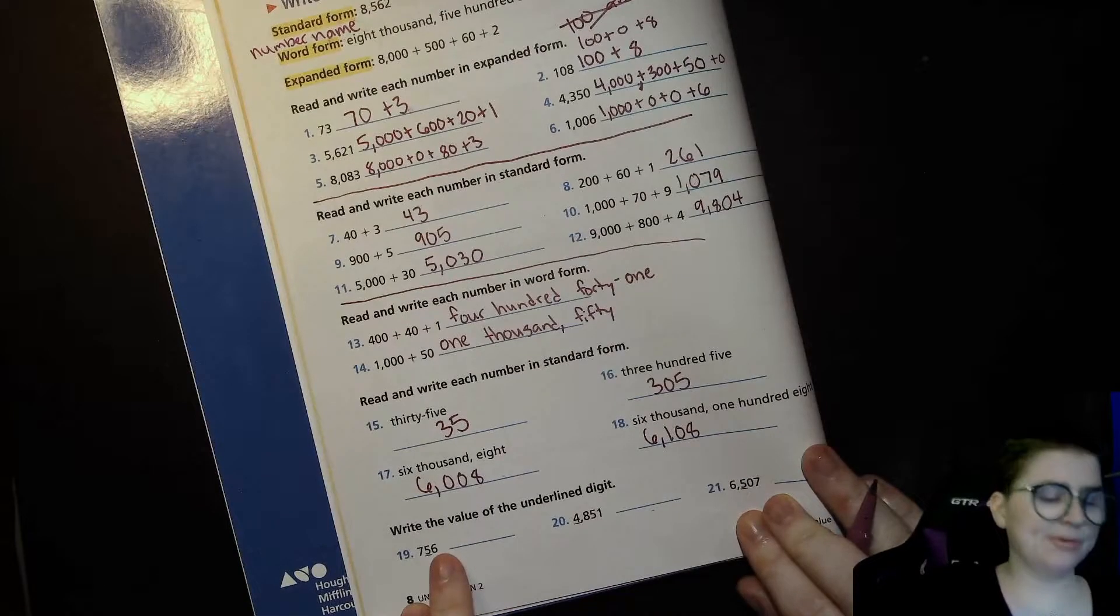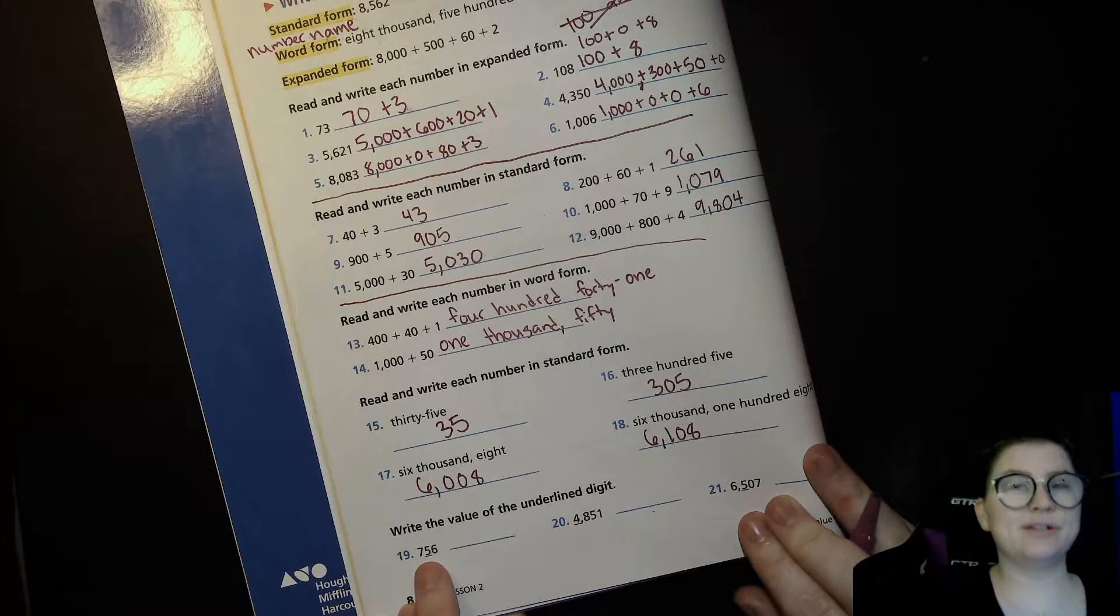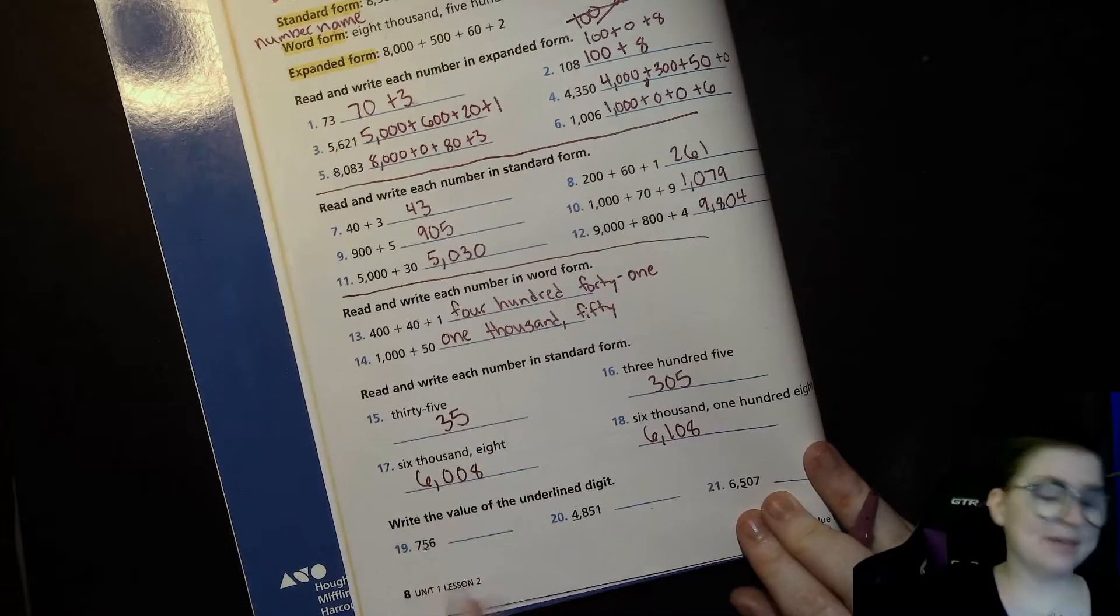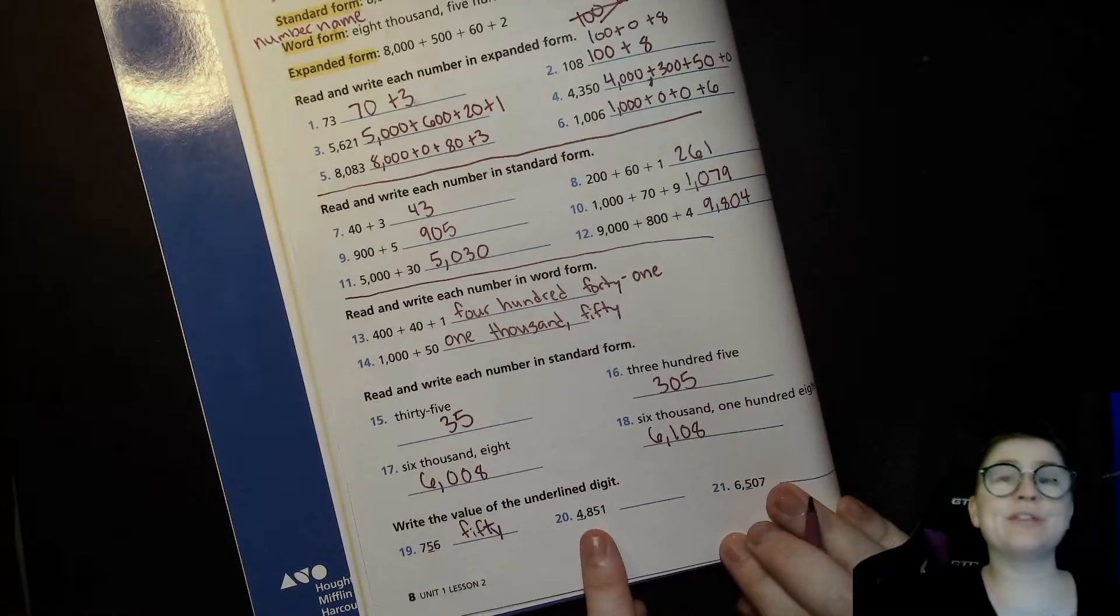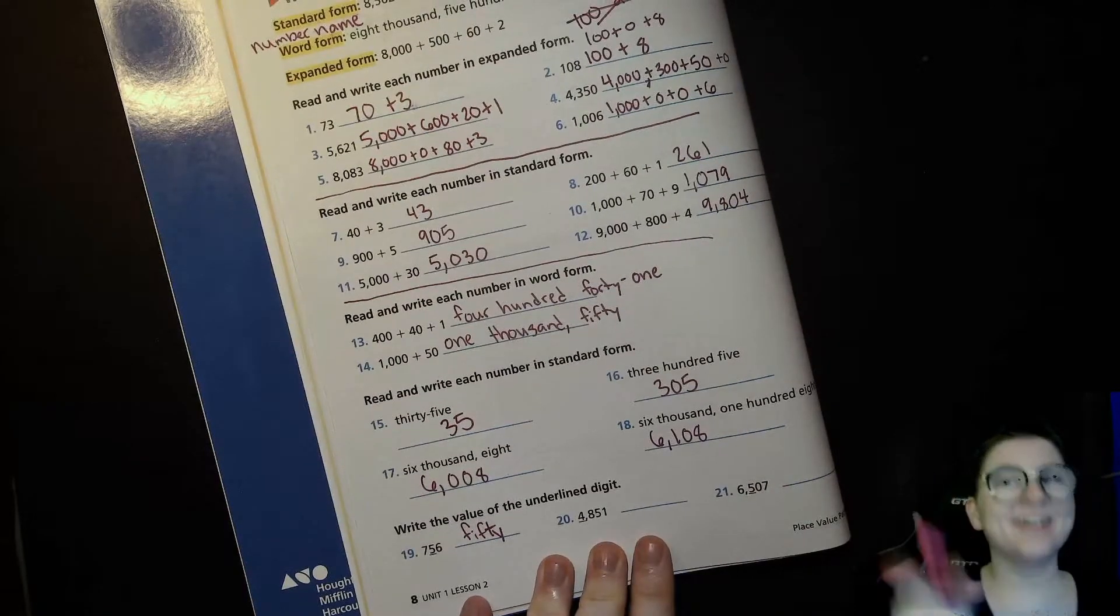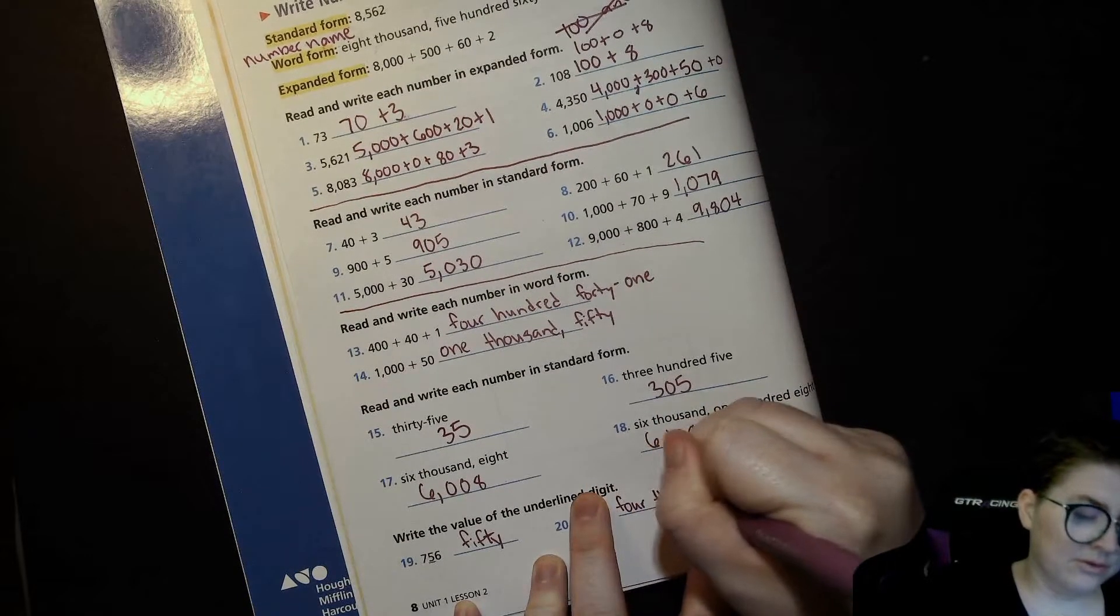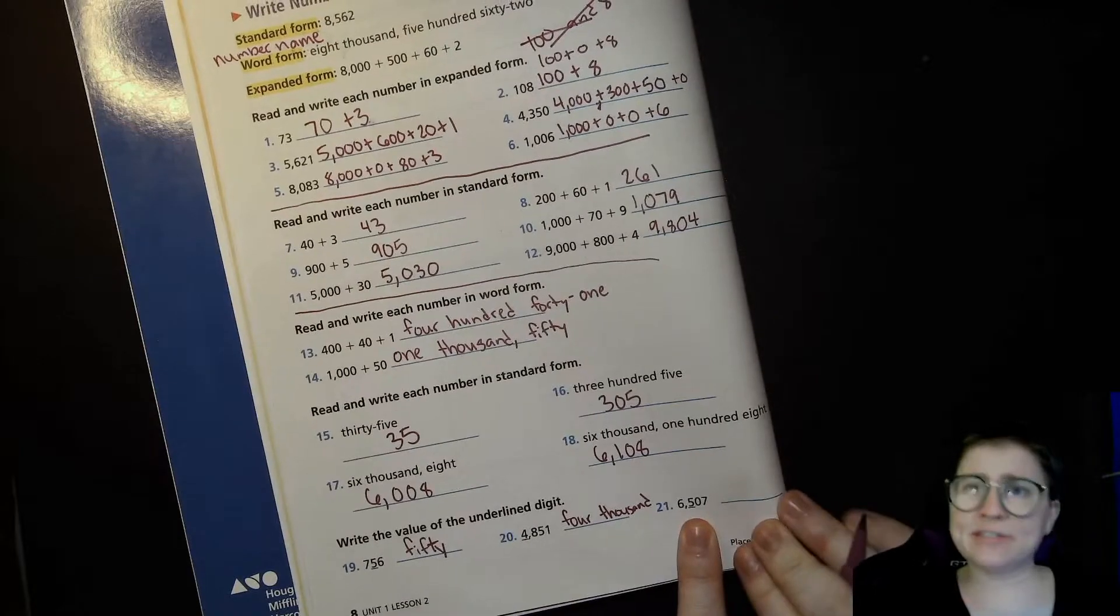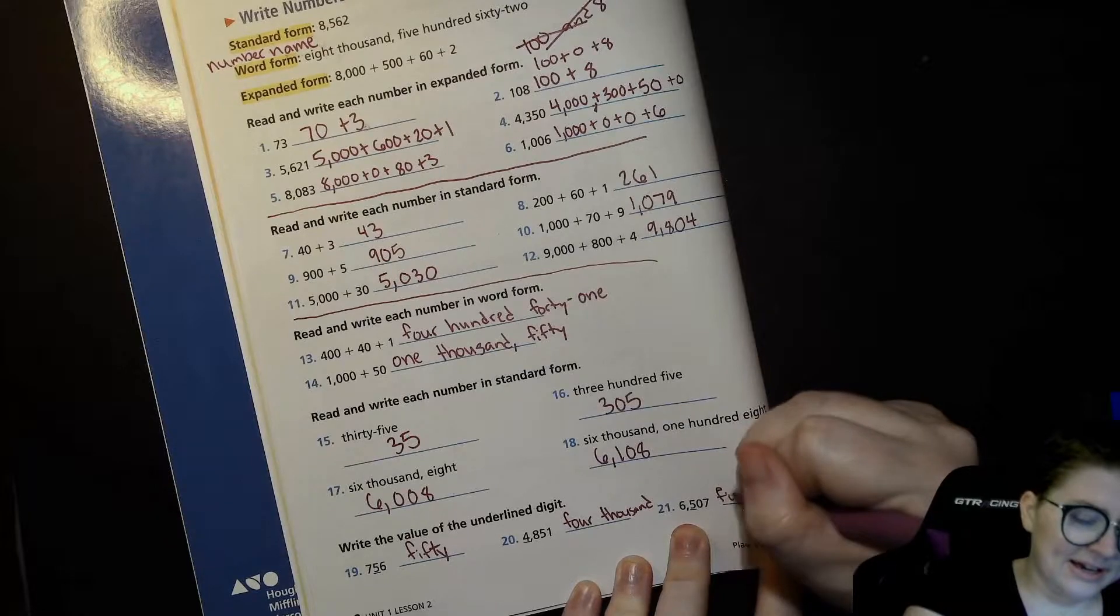Alright, now we're writing the name of or the value of that number. So you could say 7-5-6, but we know that that 5, because it's in the tens place, is 50. We know that this 4 is not just 4—it's in the thousands place, so it's 4,000. That's right. That's the value of that 4. That's what that 4 is worth. Alright, this 5 is not just a regular 5—it's in the hundreds place, so it is 500.